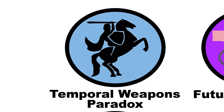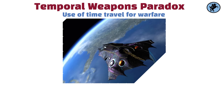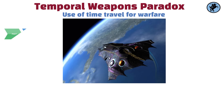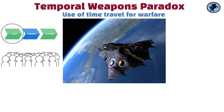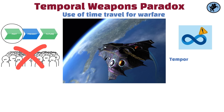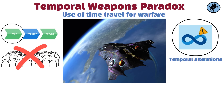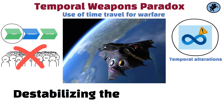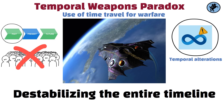The temporal weapons paradox involves the use of time travel for warfare. If it's possible to change the past, one could theoretically prevent an enemy nation from ever existing. However, this could lead to a never-ending cycle of temporal alterations as each side tries to outmaneuver the other through time, potentially destabilizing the entire timeline.